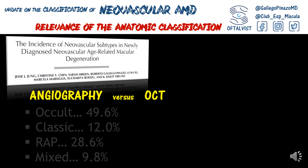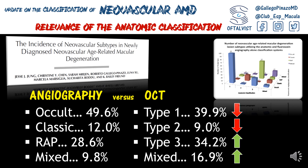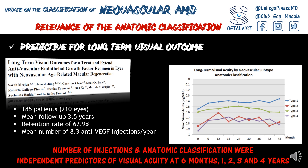So, we know how to classify neovascular lesions, but what about the relevance of it? If we are using angiography, this is the distribution of a random population with neovascular AMD, and this is the classification based on OCT. OCT shows greater ability to detect type 3 and mixed lesions, significantly more than with FA. This is important because we can predict the long-term visual outcome, as the number of injections and the anatomic classification by OCT are independent predictors of it, with type 2 lesions showing the best visual outcome of all neovascular lesions. That's why all of us love to find a type 1 lesion in a patient with neovascular AMD.